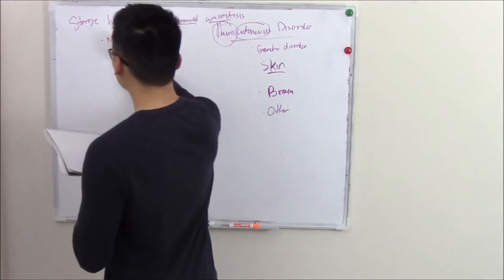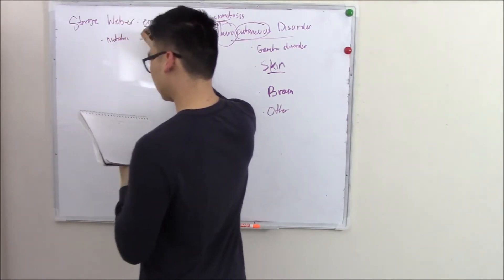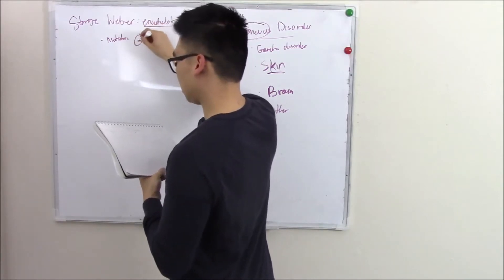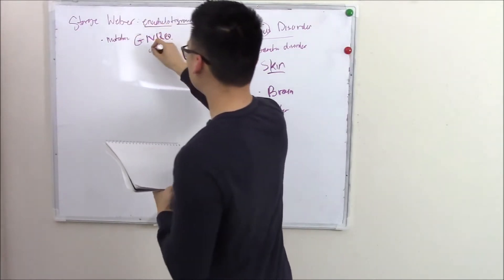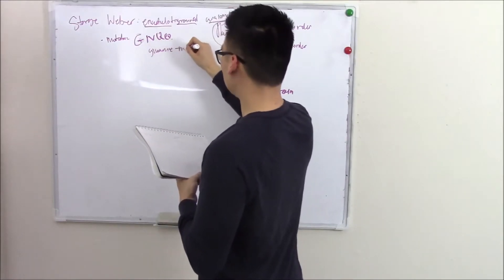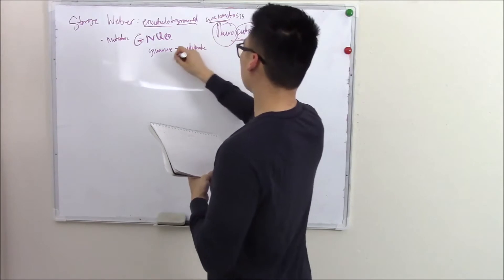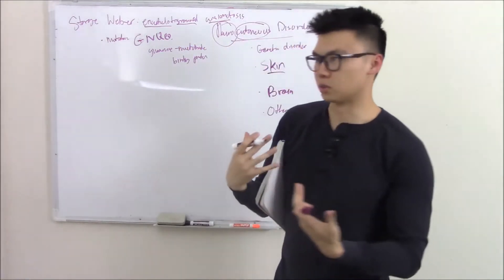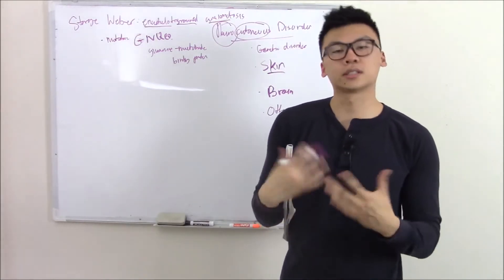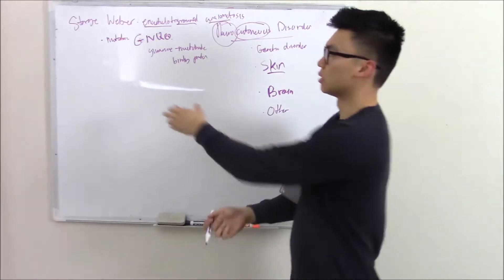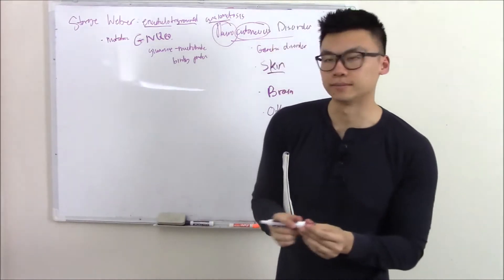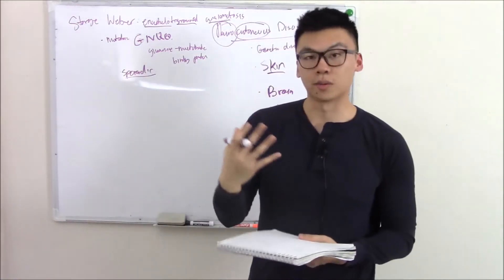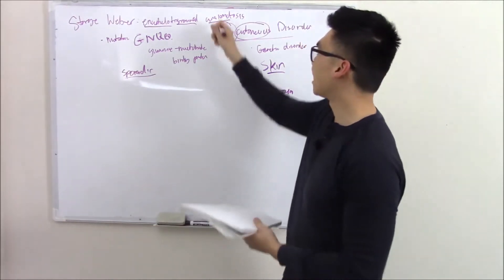This is a mutation in a gene that codes for G-NAC, which is guanine nucleotide binding protein. It's a protein that binds on your guanine, which is part of your DNA. If you have a mutation in this, then your DNA is mutated and your cells are mutated. This is a genetic disorder because we're dealing with genes, but it's not inherited. This is sporadic. When you have those mutated cells, they'll show up in your blood vessels.